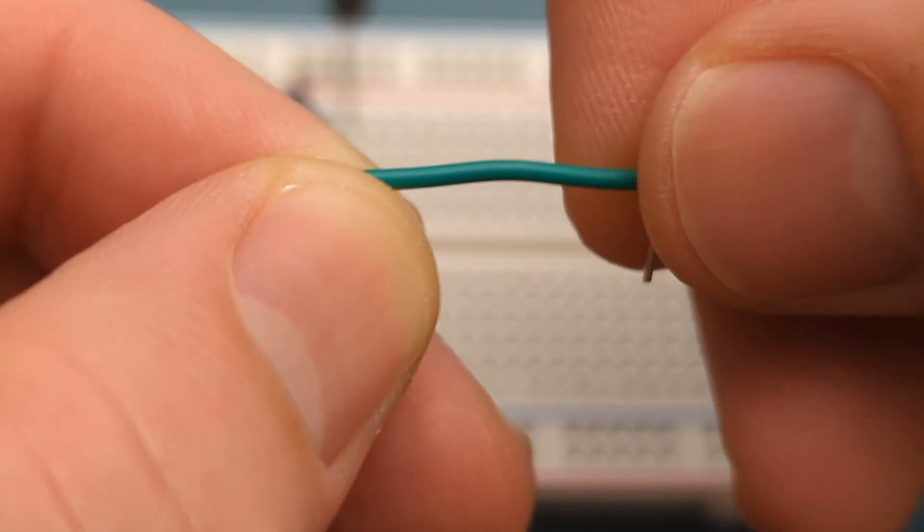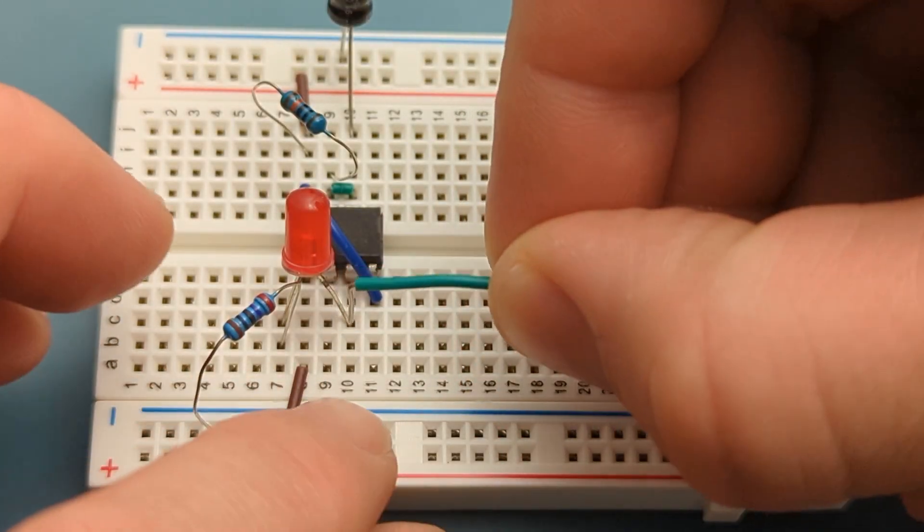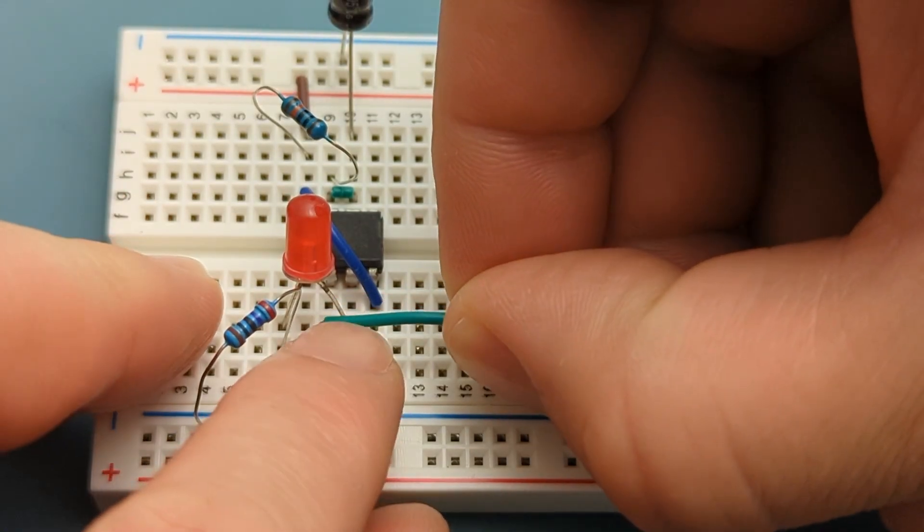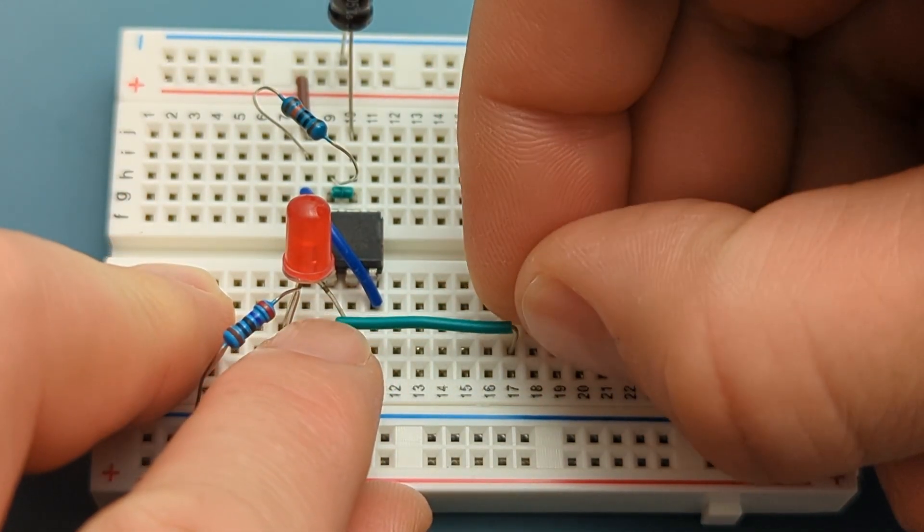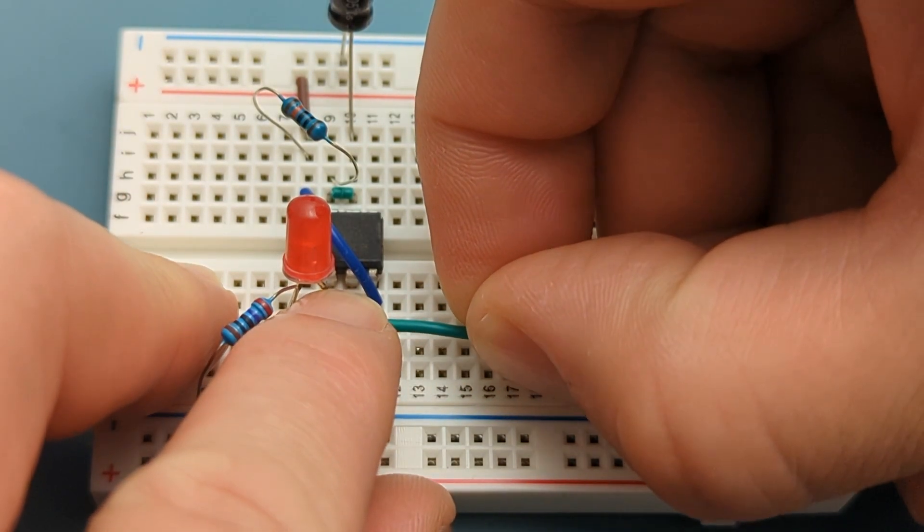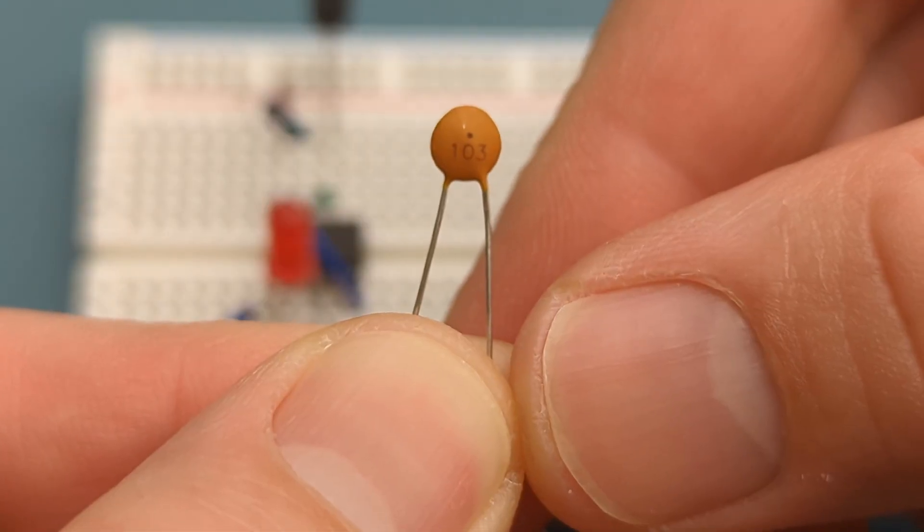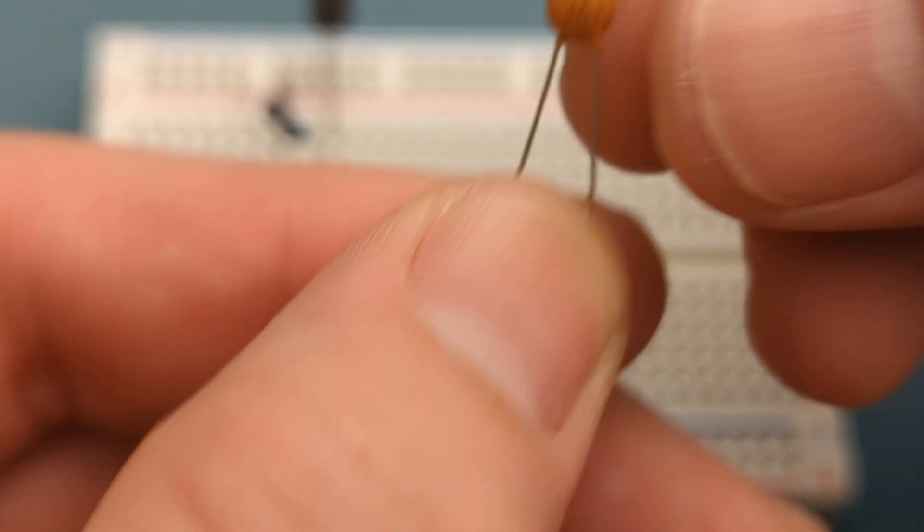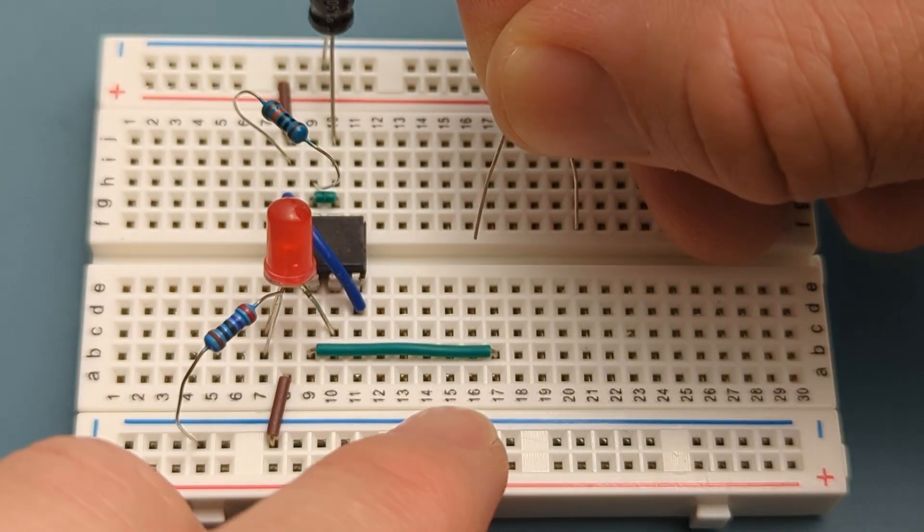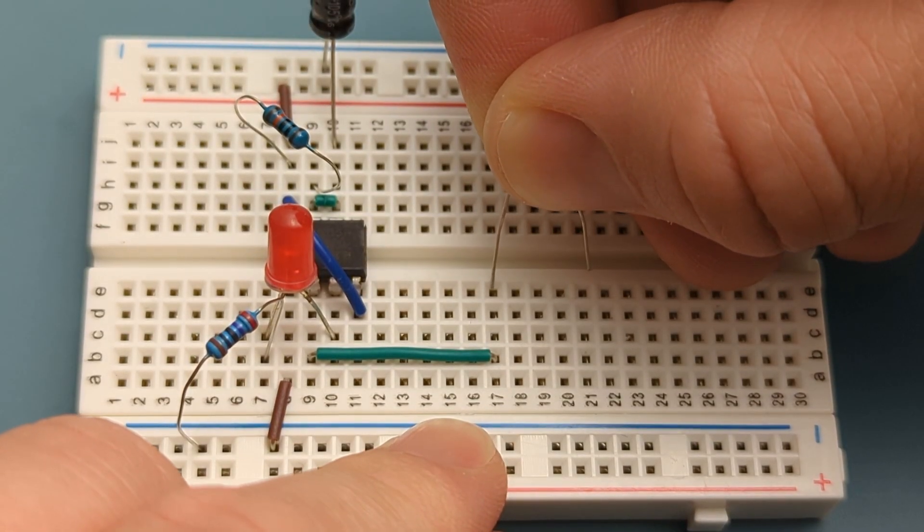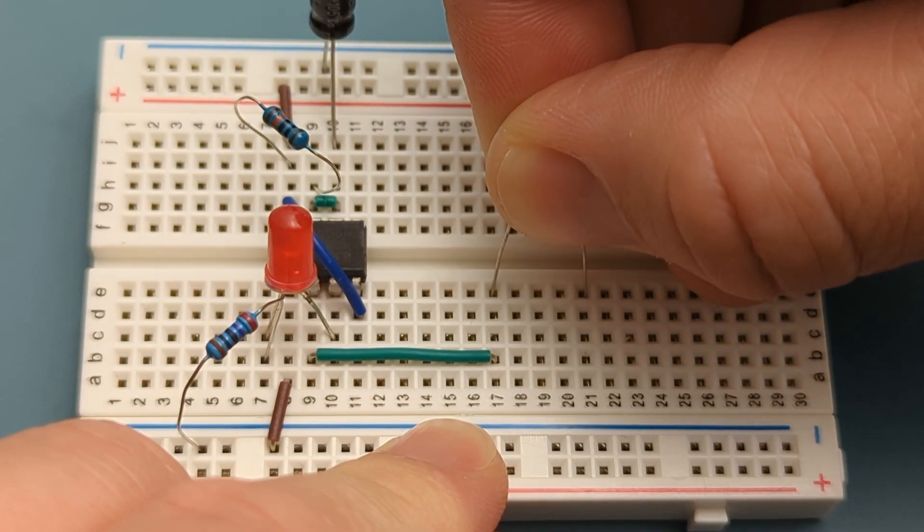Insert a jumper wire into pin 2 or trigger and a few rows below the 555 timer. Insert a 103 ceramic capacitor in the same row as the jumper wire and a few rows below it. The 103 represents a capacitance value of 0.01 microfarad capacitor.